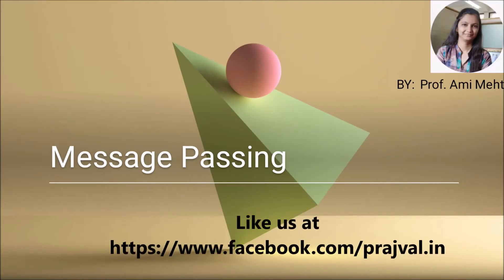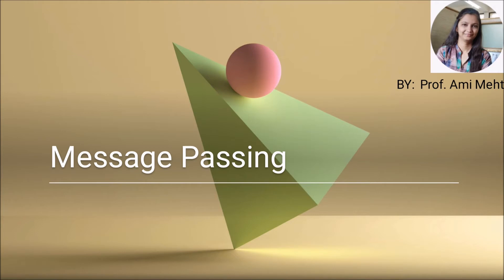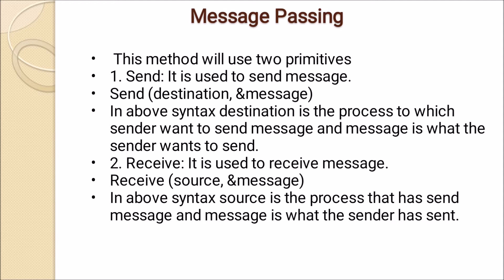Hello everyone, myself Amimeta. In operating systems, there is inter-process communication. We will discuss how to use message passing in inter-process communication. There are various methods used to achieve mutual exclusion, which means when one process is executing in the critical region, no other process can execute that particular section. To prevent violations of mutual exclusion, there are various methods.